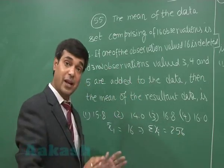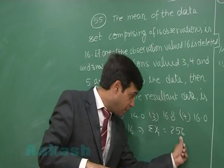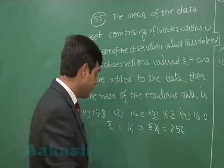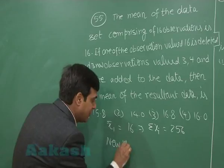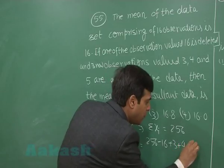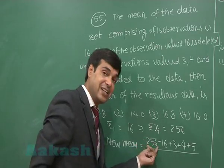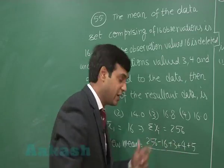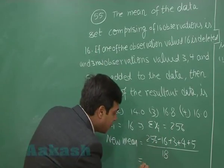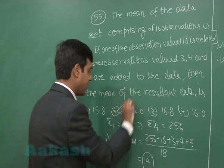From 256, one observation of 16 is deleted, leaving 240. Three more observations are added. The new mean is (256 − 16 + 3 + 4 + 5) divided by (16 − 1 + 3) = 252 divided by 18 = 14. The correct answer is option number 2.